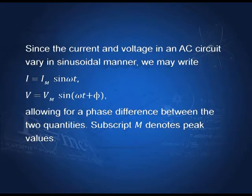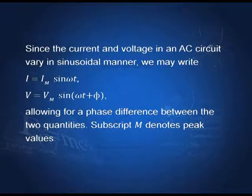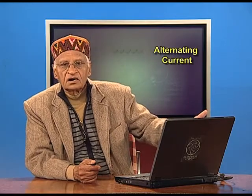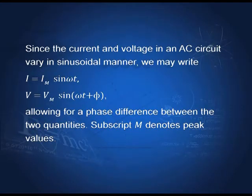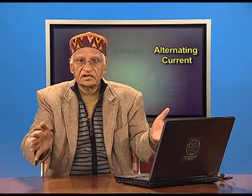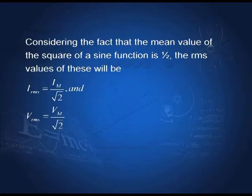With this introduction, let me go straight to the circuit. We have a current I = Im sin(ωt), sinusoidal, and voltage V = Vm sin(ωt + φ). Phi has been introduced so that it can deal with any phase difference between the two. Im is the amplitude of I, Vm is the amplitude of V. The RMS value of I squared is Im² times sin²(ωt), and the average value of sin² is one-half. Therefore, the RMS value of I is Im/√2 and the RMS value of V is Vm/√2.